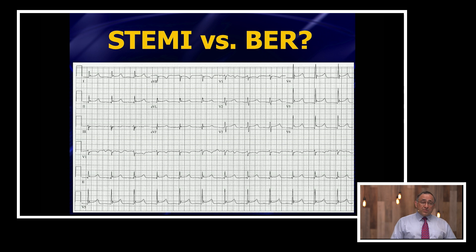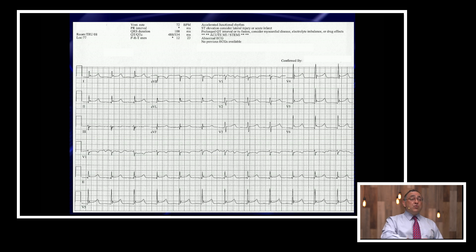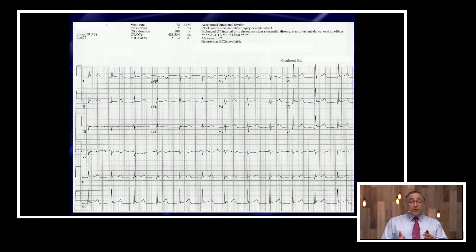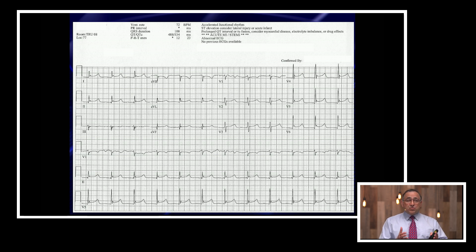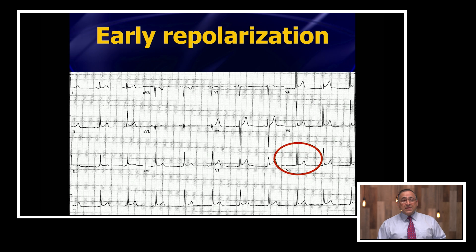The computer interpretation is suggesting that this is a STEMI. So you could go ahead and activate the cath lab and let the cardiologist figure it out, which would be totally appropriate. Or you could get a stat echo or do a POCUS yourself. I'll admit I am not good enough to reliably distinguish early repol versus STEMI on echo. So with just the 12-lead ECG, is there anything you can look at to reliably help make that distinction?